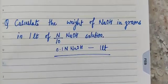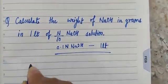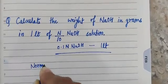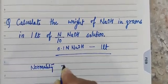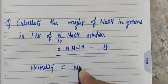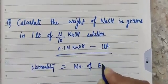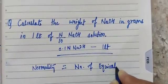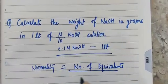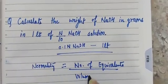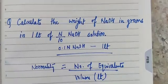So very first thing that we need to know is normality, formula of normality. It is equals to number of equivalents divided by volume in liter. Okay.